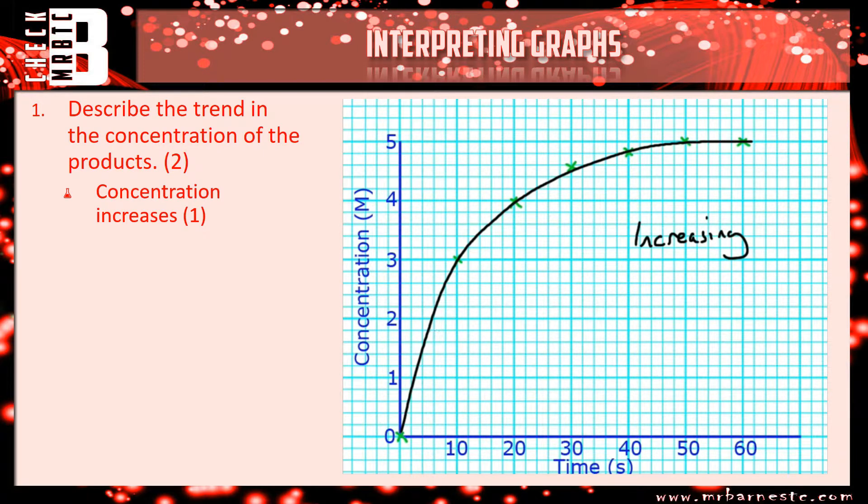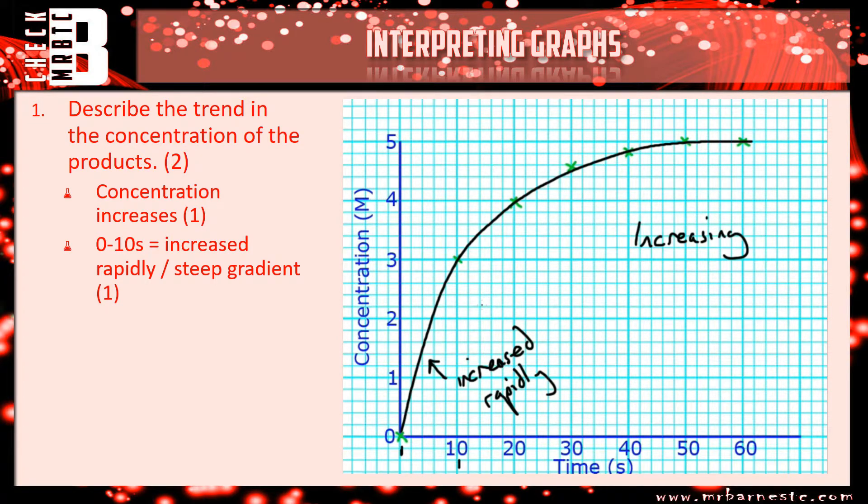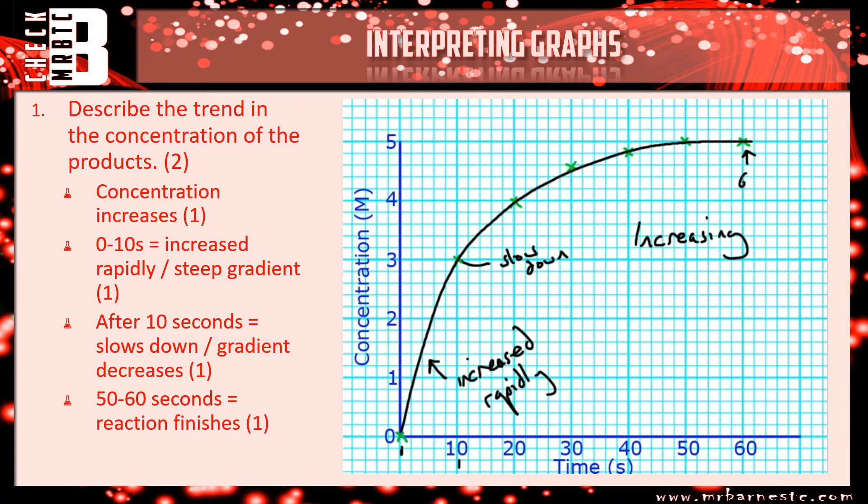Now, you're going to need to pull some data from it. So, what you could do is turn around and say between 0 and 10 seconds, it's increased rapidly. Or you could say it's a steep gradient. You could say after 10 seconds, so from here onwards, it starts to slow down. So, the gradient decreases, and the reaction finishes at 60 seconds.